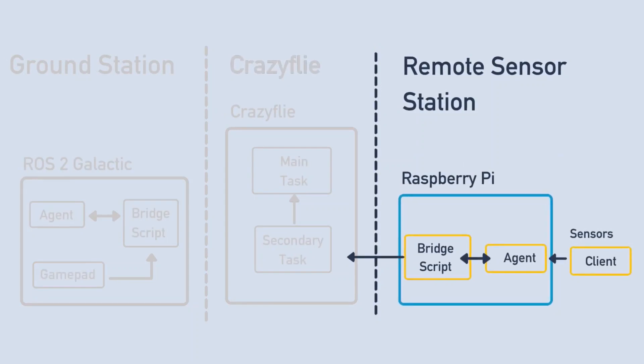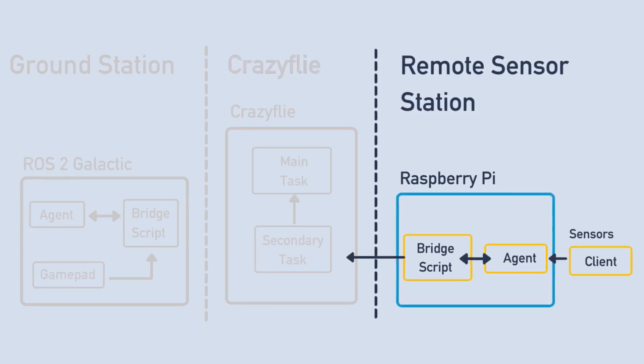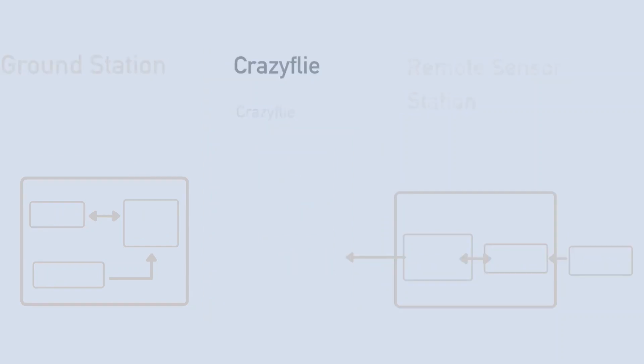Second, the Remote Sensor Station: a Raspberry Pi with a SparkFun Weather Station sensor connected with a MicroXRCE agent instance, acting as a broker between the sensors and the drone. The sensor data will be published using a regular MicroROS client application.